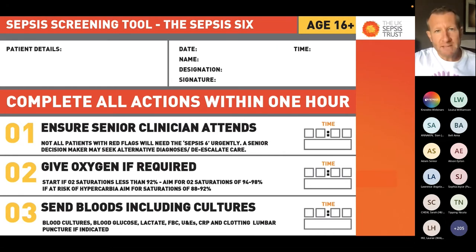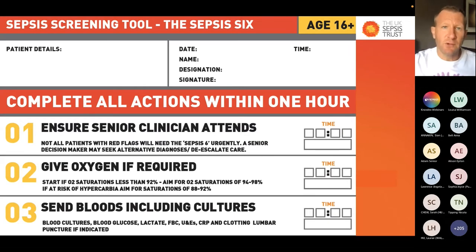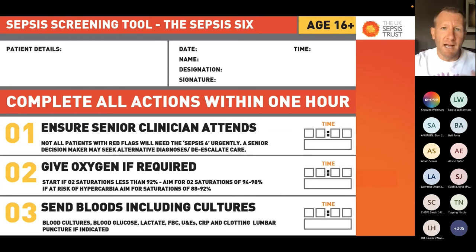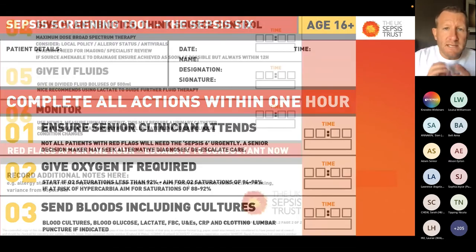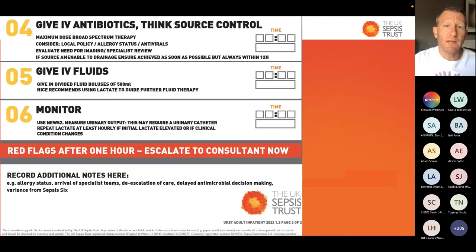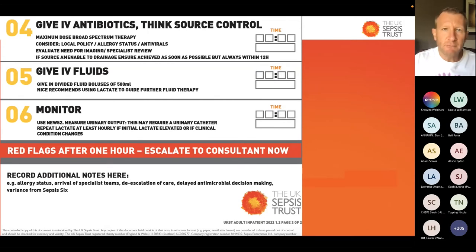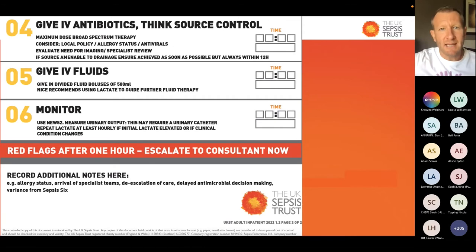The Sepsis-6 changed in 2019, meaning the 'three in, three out' aide-mémoires and the BUFFALO acronym are now redundant. The updated NICE-endorsed Sepsis-6 involves: getting a senior clinician on the way; correcting hypoxia; sending a full set of bloods including cultures, lactate for risk stratification, procalcitonin to differentiate infective from non-infective or bacterial versus viral, and multiplex pathogen identifiers; giving antibiotics with source control added in 2019; giving fluids; and monitoring the patient. All tools include a 'variants' box—these tools should never replace clinical judgment.